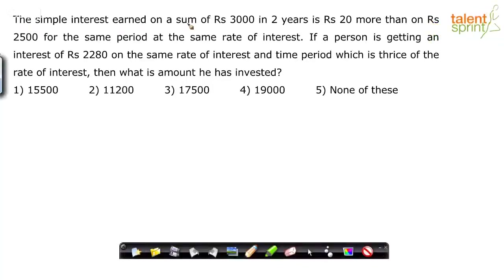The simple interest earned on a sum of rupees 3000 in two years is rupees 20 more than on rupees 2500 for the same period at the same rate of interest. If a person is getting an interest of rupees 2280 on the same rate of interest and a time period which is thrice of the rate of interest, then what is the amount he has invested?